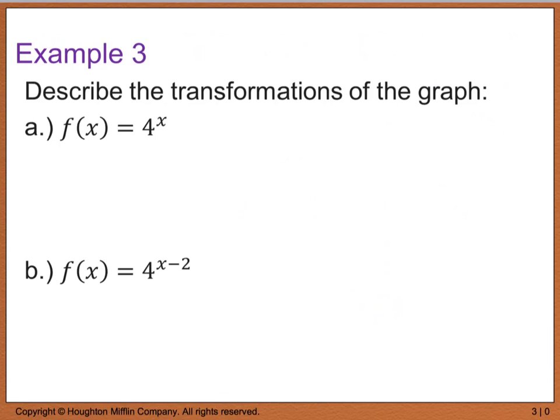So for example 3, we want to describe the transformations of the graph. Now in part a, I want you to graph f of x equals 4 to the x. And then on that same graph, I want you to graph b. And I want you to look at the difference between part a and part b. And what you should notice is that because I have this x minus 2 right here, my graph will actually shift 2 units to the right. So it's going to shift 2 units to the right because of this minus 2 right there because that's part of the exponent itself.